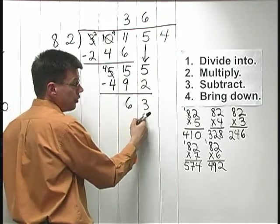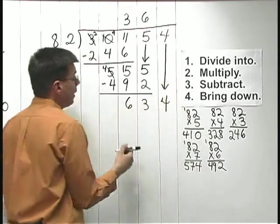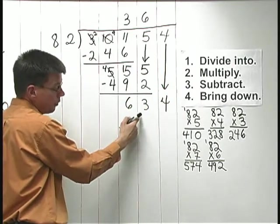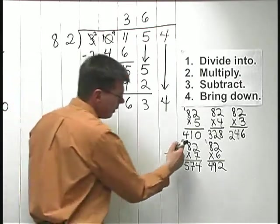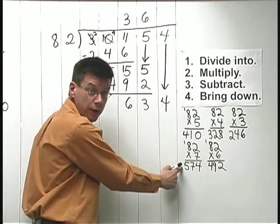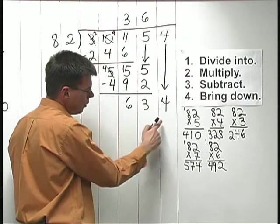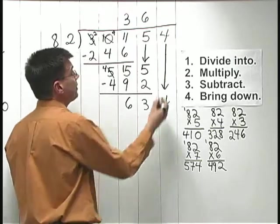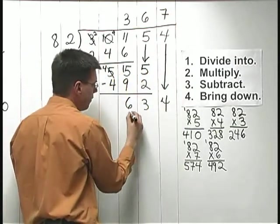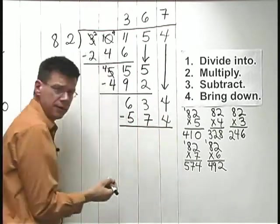After I do the subtraction, the next step is to bring down the next digit. Bring down the 4. And I ask myself, how many times does 82 go into 634? Now, again, let's look over what we figured out so far. The biggest number we have here is 574. That was 82 times 7. I wonder if that's going to be good enough here. I'm going to go ahead and try that 82 times 7. 7 times 82 is 574.